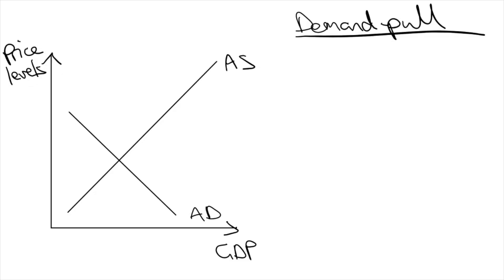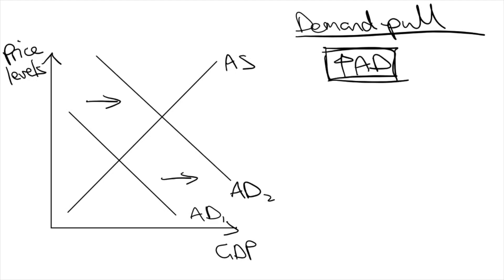The first type of inflation we'll explore is Demand-Pull Inflation. This type of inflation happens when there's an increase in aggregate demand without an increase in aggregate supply. As you can see in this diagram, when the demand curve shifts to the right, it causes price levels to increase. Inflation is worsened if aggregate supply is not increasing and is price inelastic.